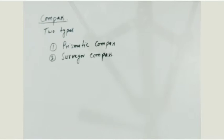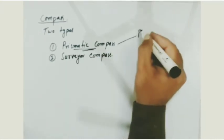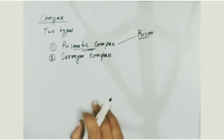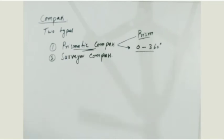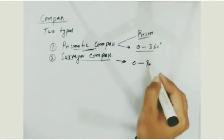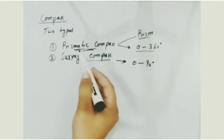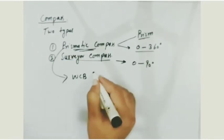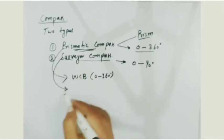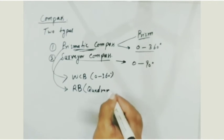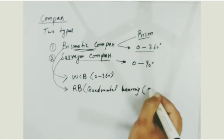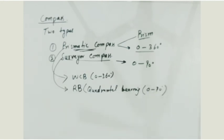What is the difference between prismatic compass and surveyor's compass? The prismatic compass has a prism attached to the eyepiece, and it gives you bearing from 0 to 360 degrees — this is called whole circle bearing. While the surveyor's compass gives you bearing from 0 to 90 degrees, which is called reduced bearing, also known as quadrant bearing. Thanks for watching.